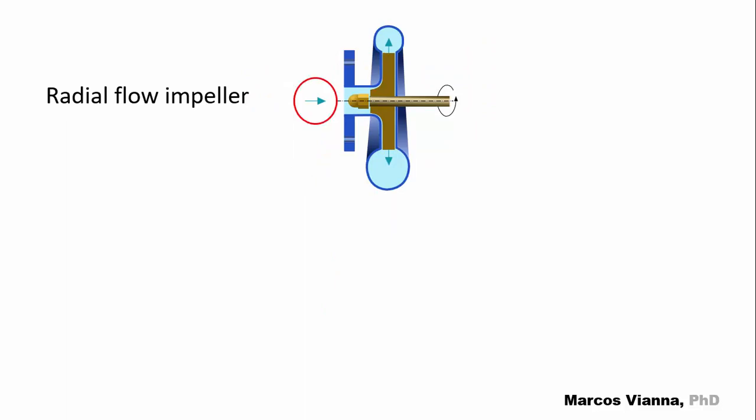The water flows parallel to the axis and flows out perpendicular to the axis or radially. This kind of impeller is good for relatively small flows and relatively high heads.